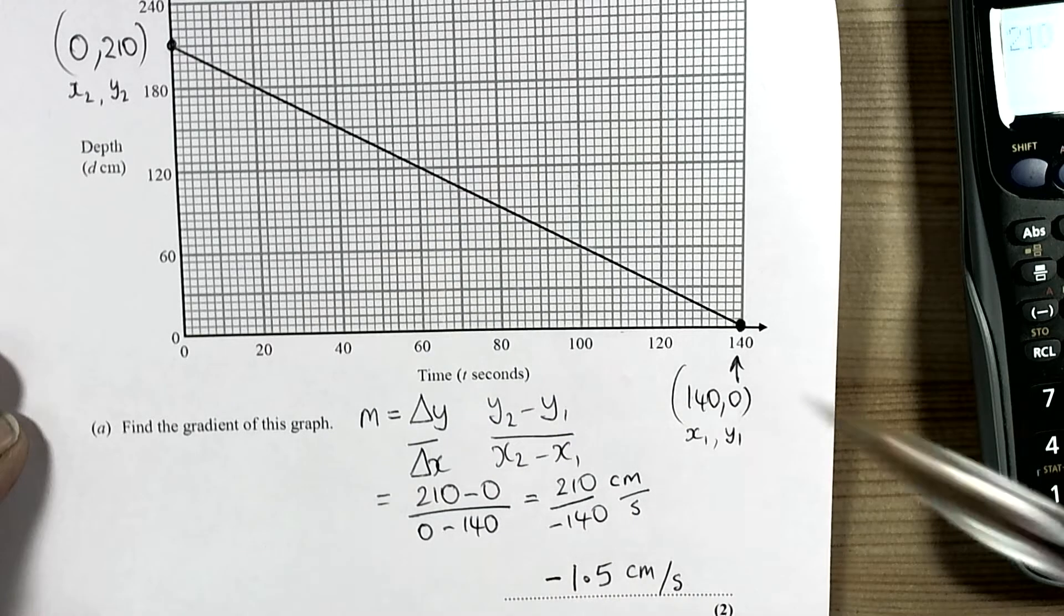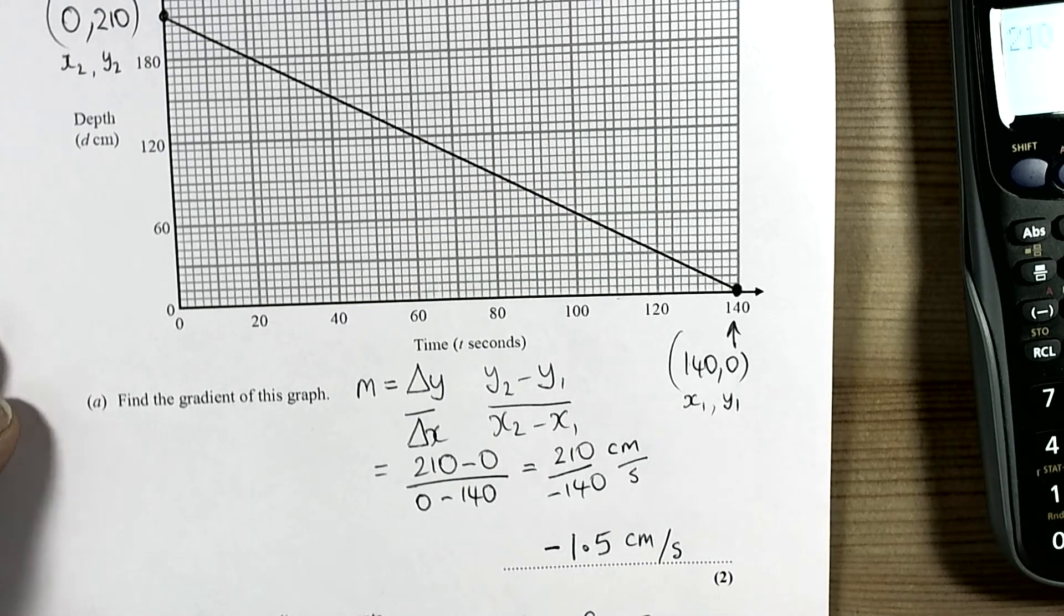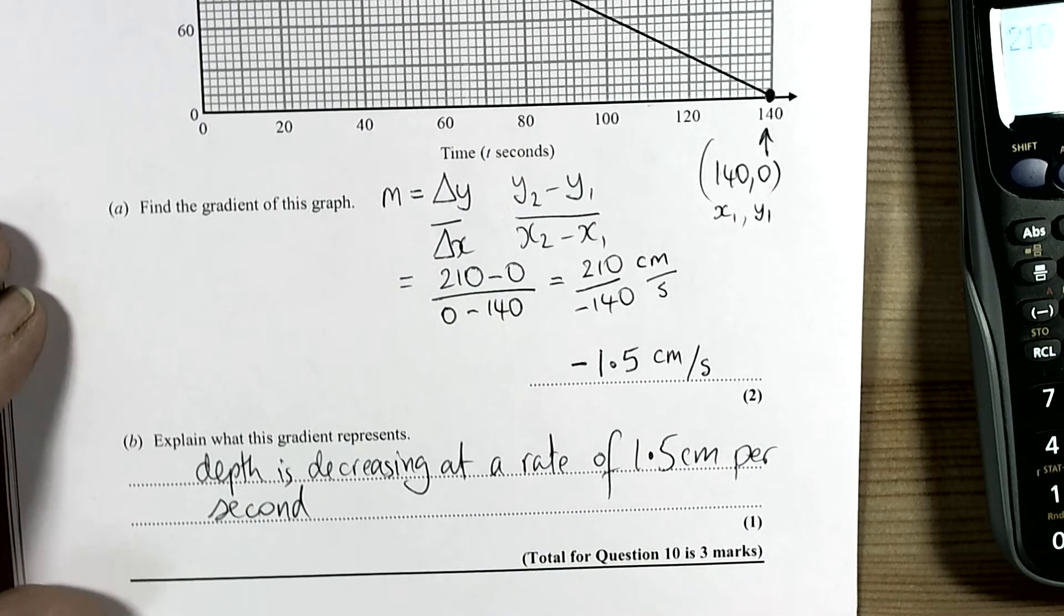In this case if it was a curve then it would be the rate of change at that point, if you do the gradient at a particular point on a curve. Okay so that's how that question could have been answered.